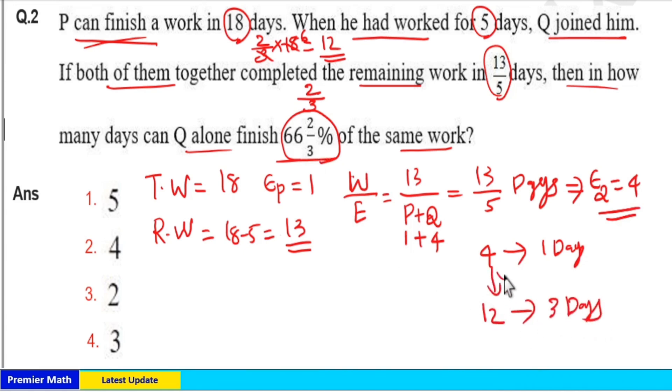4 into 3 is 12, which means 1 into 3 is 3. So 12 units work, that is 2 by 3, completed in 3 days.